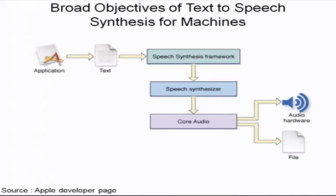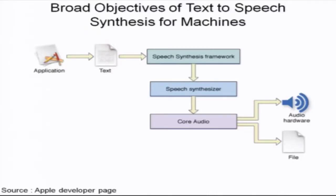We will start off, just as we did in speech recognition, by defining the broad objectives of text-to-speech synthesis for machines. Consider this diagram: in speech recognition, it was a process of converting the speech signal to text — a signal to symbol transformation. Text-to-speech synthesis is exactly the opposite. Given the text, you would want to synthesize the speech signal. The application could be anything — pulling information from a database, typing in some text, or having a document that you want to read out.